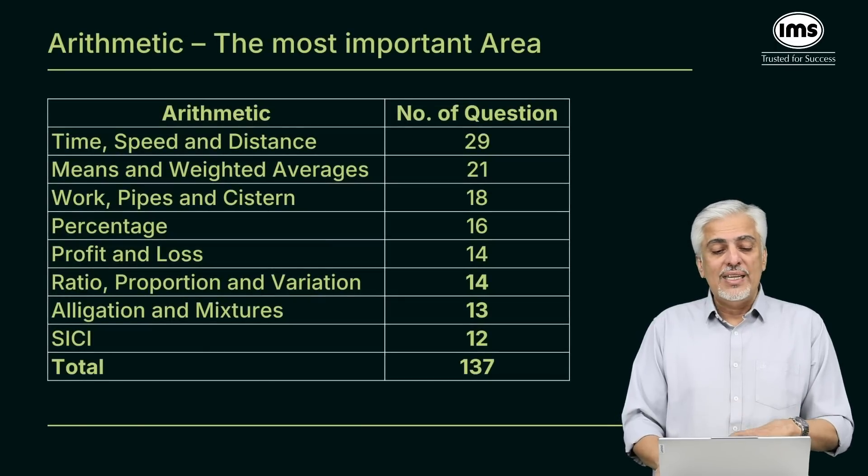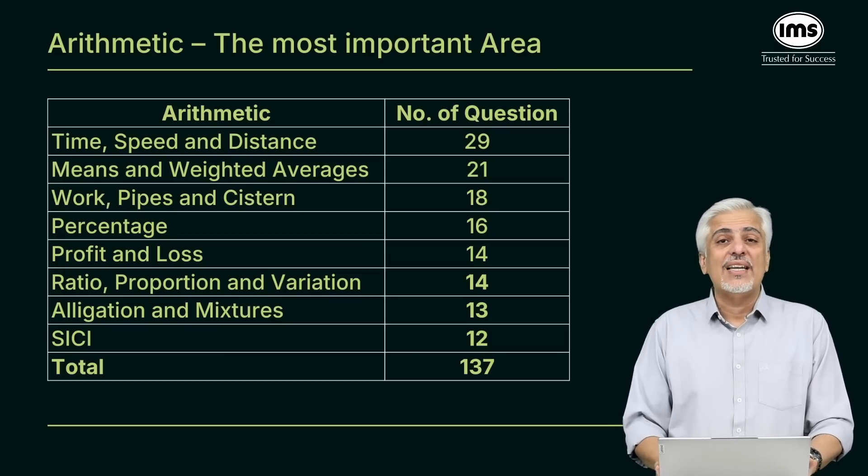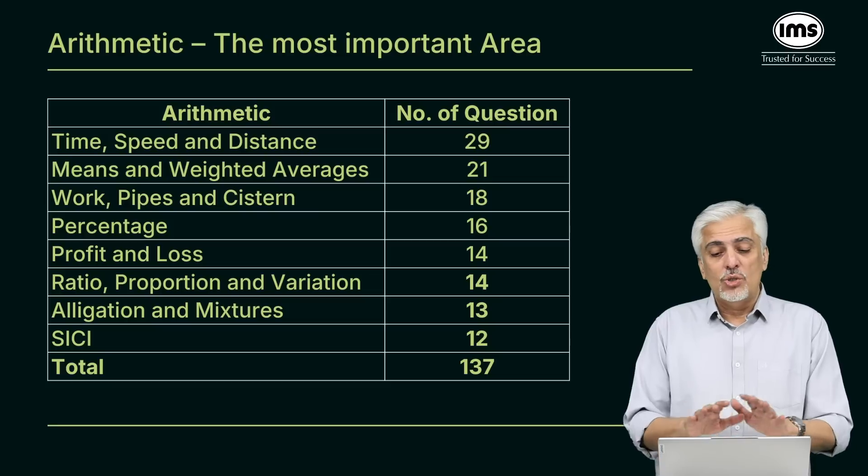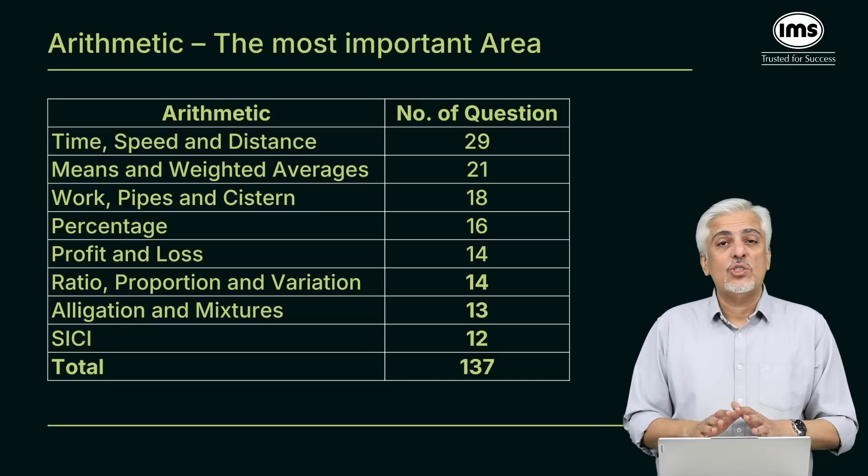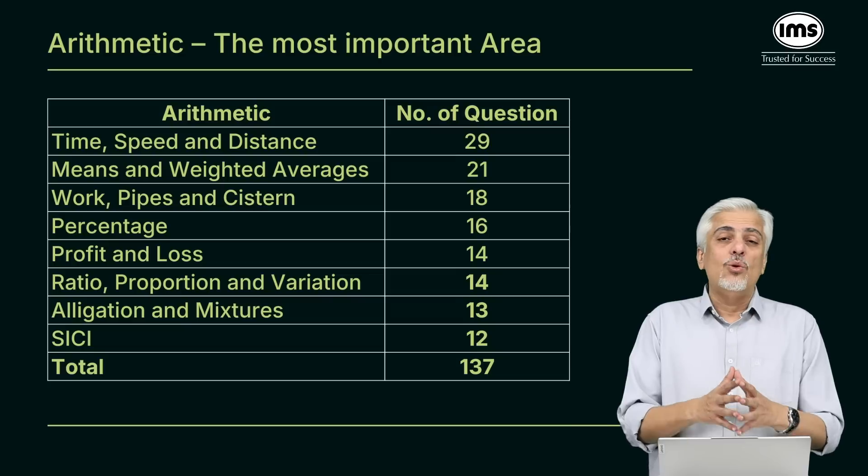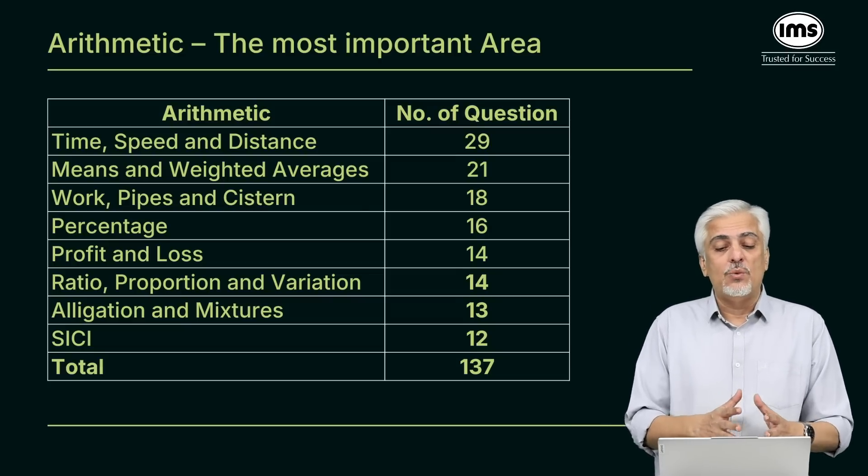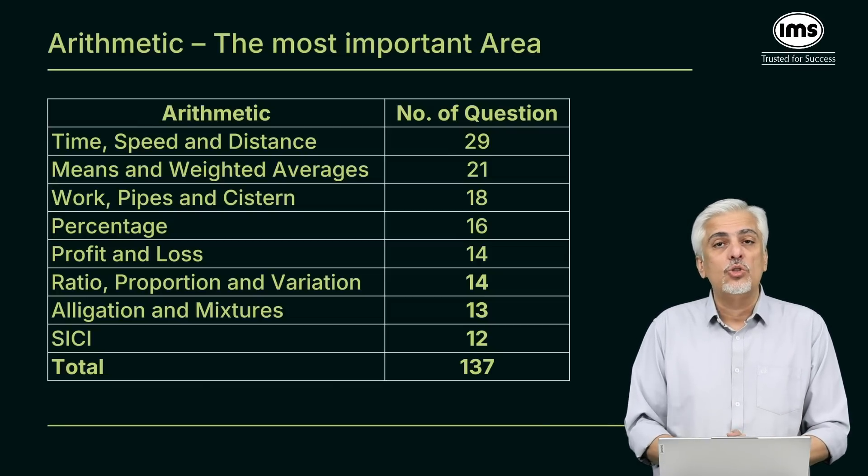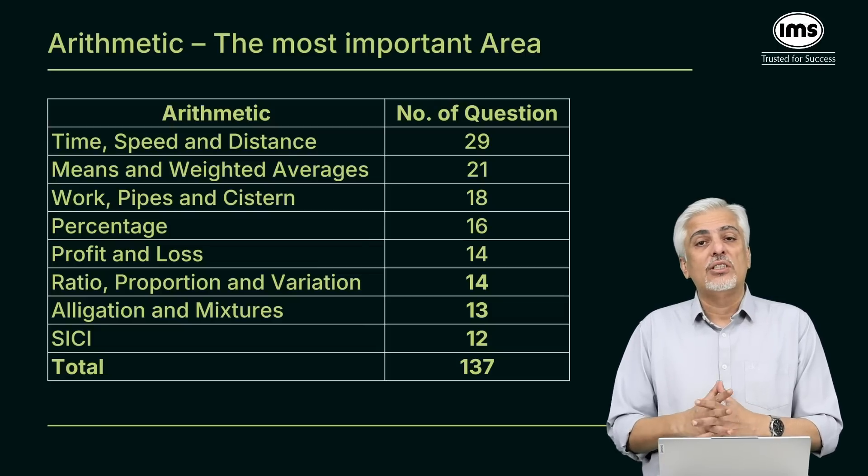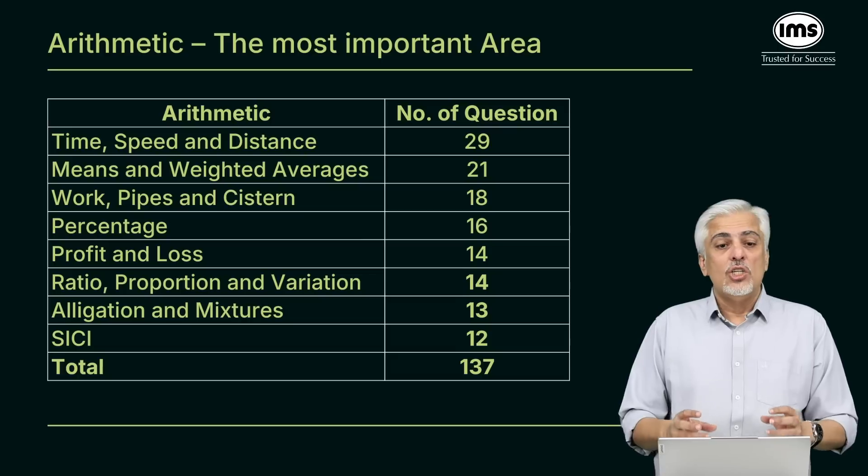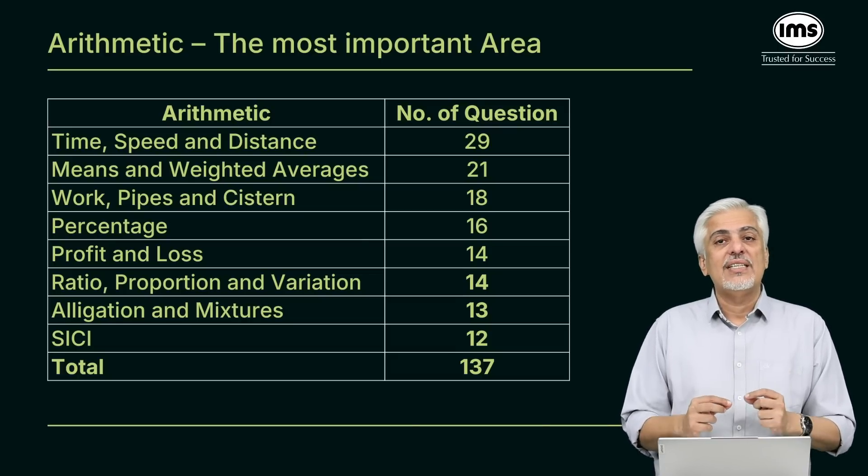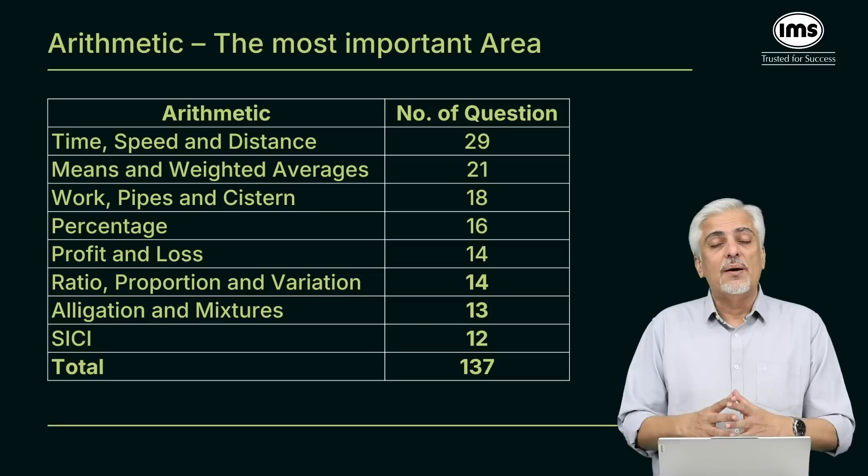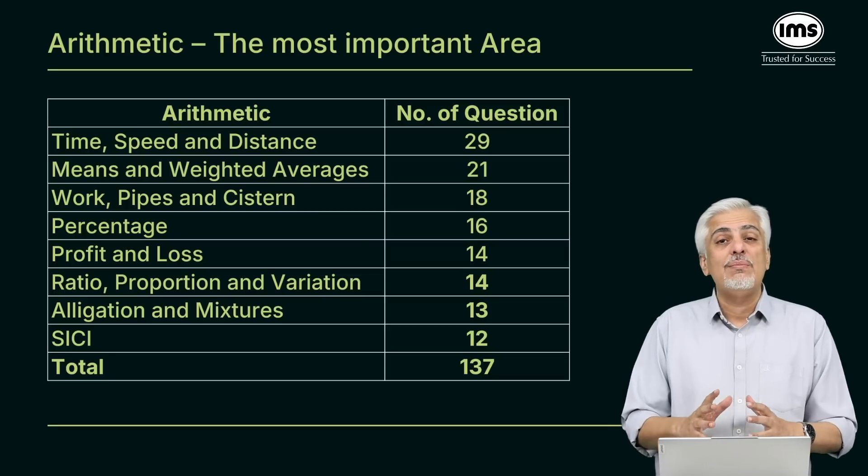Arithmetic the most important area. Time speed distance has 29 questions. Just look at the weightage, time speed distance alone is 29, that is as good as very close to what modern maths is. Between time speed distance and work pipes and cistern, which is approximately 47 questions including those two topics, they are more important than geometry or numbers by itself. Weightage for time speed distance is very high.